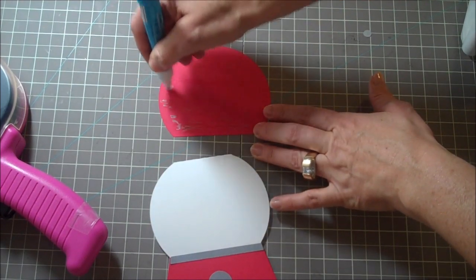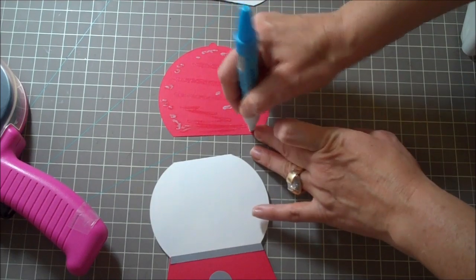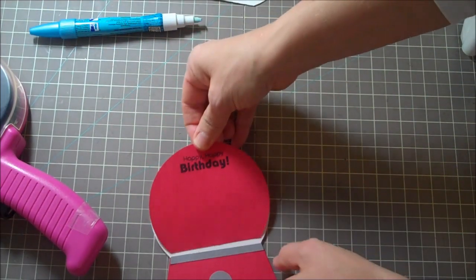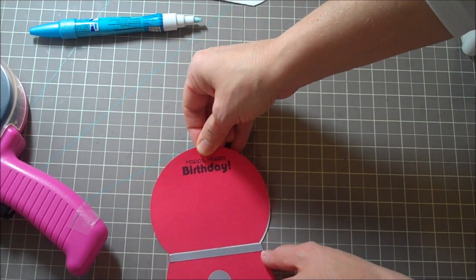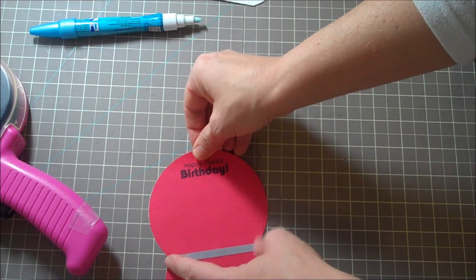It was kind of gumming up on me too much, so I've just switched over to my Zig two-way glue pen because that was not working for me. I'm just going to go in between where I did the glue gun and put this right in here. Not glue gun, but tape.